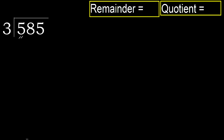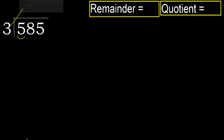585 divided by 3. Let's start with 5. 3 multiplied by which number is nearest to 5, but not greater?